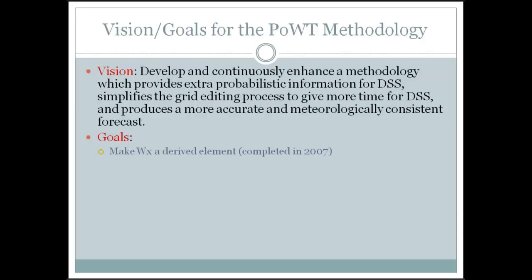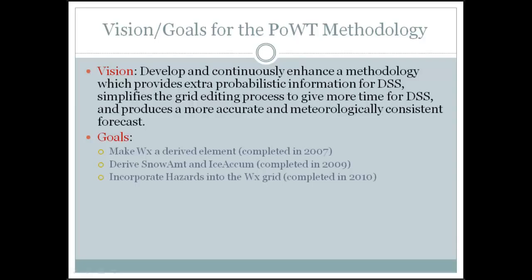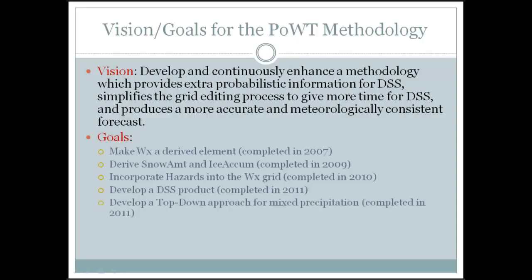The first development goal was to somehow make weather a derived element, because the weather grid is just ugly — it's a string grid called an 'ugly string' in GFE terminology. In 2009, I moved on to deriving snow amount and ice accumulation. Then I brought the hazard grid into the weather grid — things like severe thunderstorms and dense fog advisories automatically ingested. Then I developed a DSS product from that extra information, which has been running experimentally for a couple of years. The more advanced idea was to develop a top-down approach for mixed precipitation and insert it into the methodology.